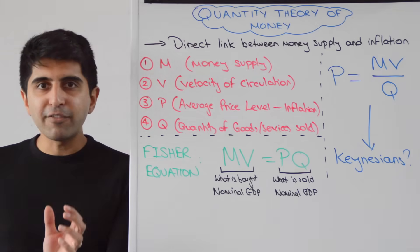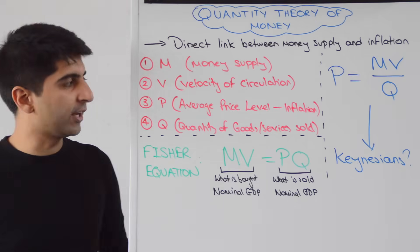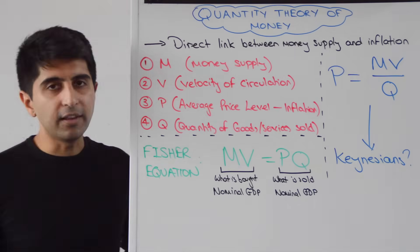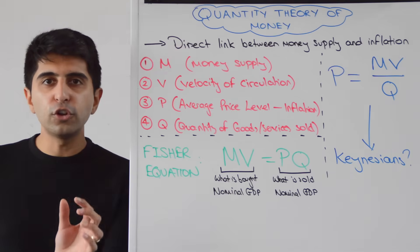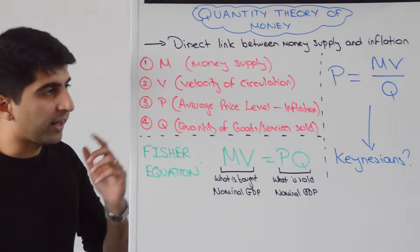P is the average price level, okay? So the average prices of final goods and services in the economy. That's basically going to be our inflation rate. And Q is the quantity of final goods and services sold in the economy, i.e. real GDP. So that's what Q is.